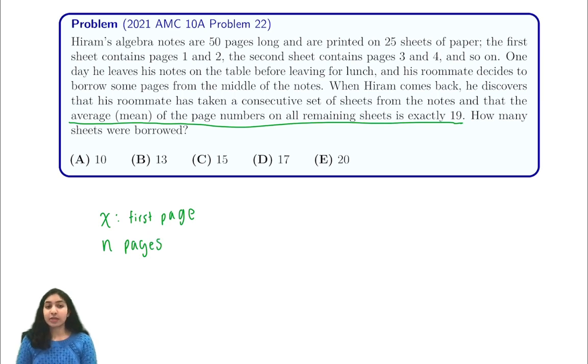We want to write some system equation that tells us that the average of the sheets is 19. So our initial sum of the sheets is 50 times 51 over 2, which is 1,275.